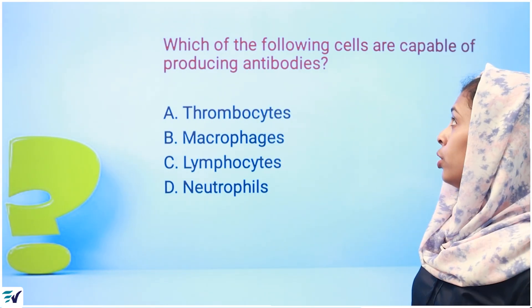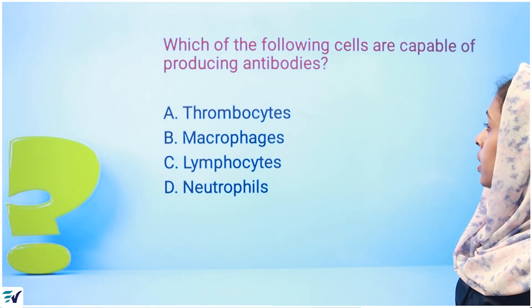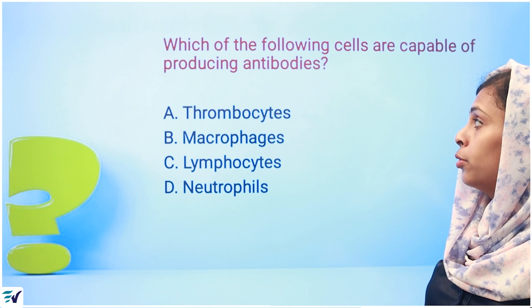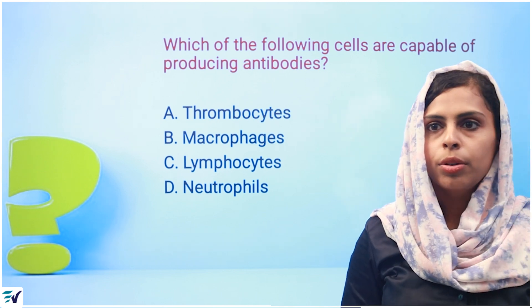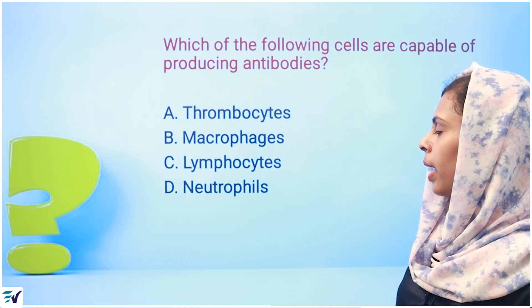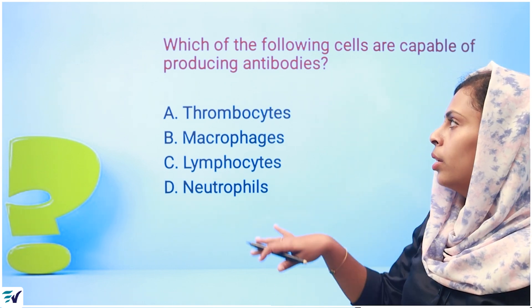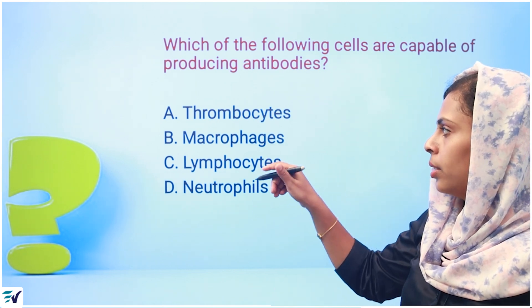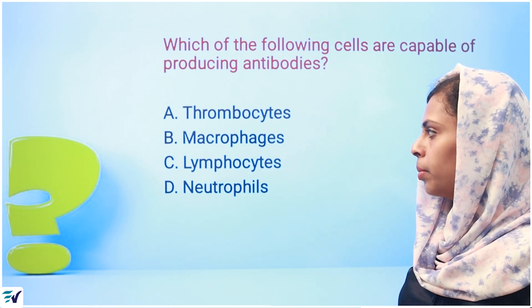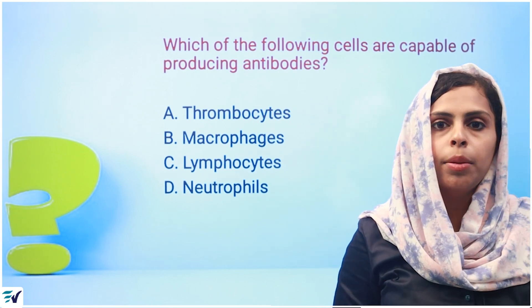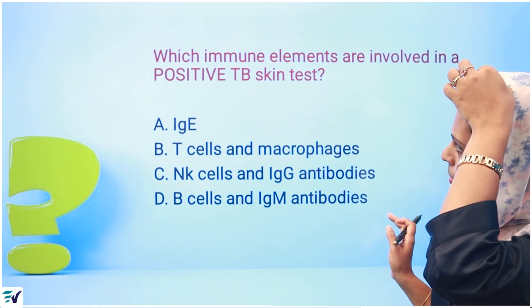First question: which of the following cells are capable of producing antibodies? The options are lymphocytes, thrombocytes, macrophages, and neutrophils. The answer is lymphocytes.